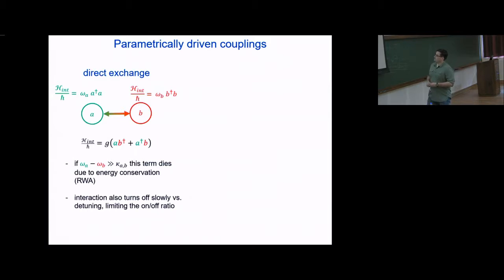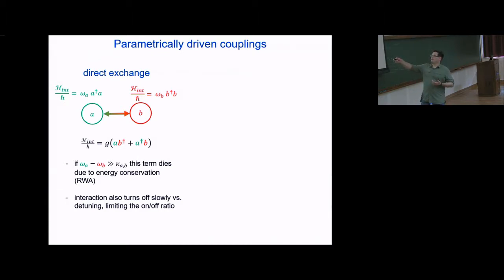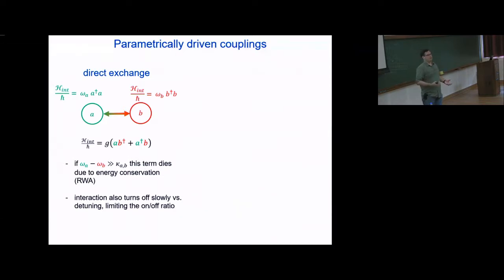Before discussing parametrically driven couplings, consider a simple coupling between two harmonic oscillators A and B, each with Hamiltonian ωₐa†a and ωᵦb†b. Their interaction is g(ab† + a†b) — a standard hopping interaction where photons from A try to hop onto B and vice versa. If ωₐ and ωᵦ are very different — far separated compared to their linewidths κₐ and κᵦ — this term dies due to the rotating wave approximation. It costs a large energy to make the transition, and there's no source to power it, so drag them apart in frequency and they won't talk anymore.